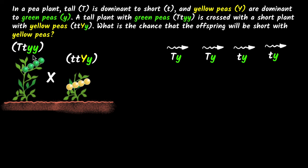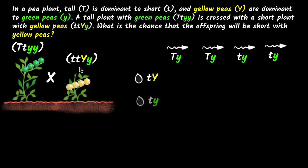The height and the color alleles are independent of each other and therefore they assort independently. Now similarly, what will it be for the eggs? Why don't you pause and write that down yourself first? We will have this t combining with this y, this t combining with this other y, this t combining with this y, and this t combining with this y. And there you have it.